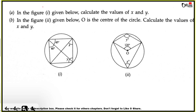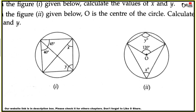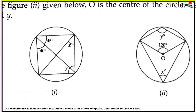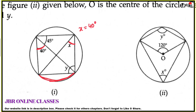Problem number 4: Calculate the values of X and Y. Taking the first segment, the 40-degree angle equals X, because angles lying on the same segment are always equal. So X equals 40 degrees.